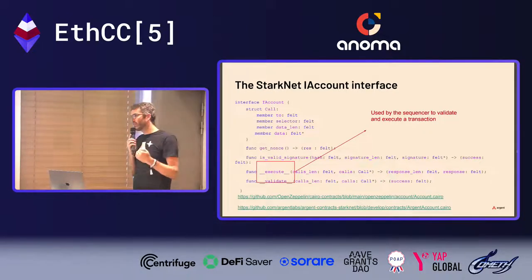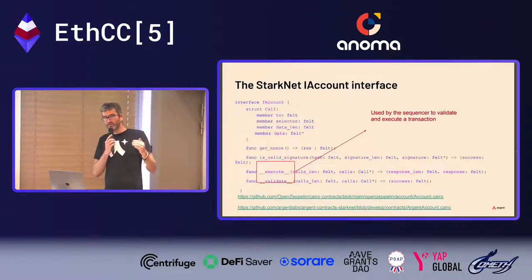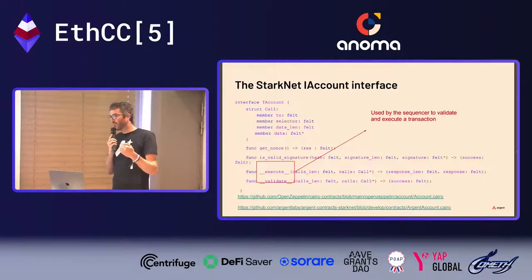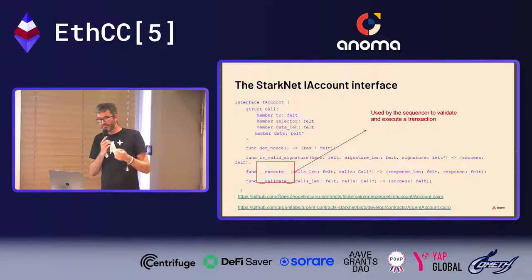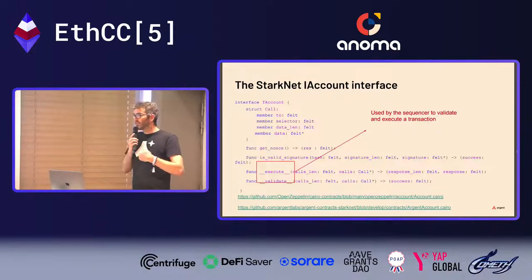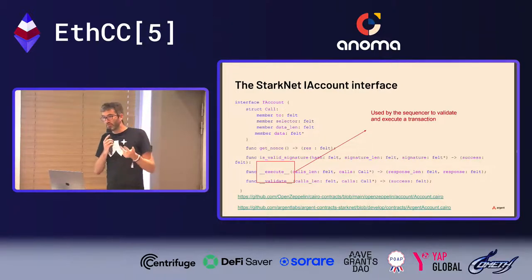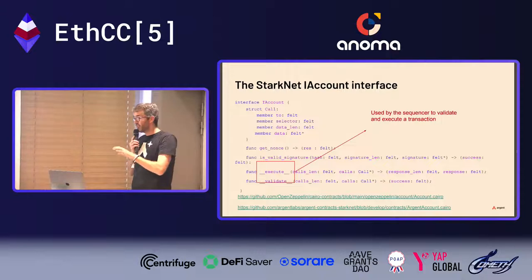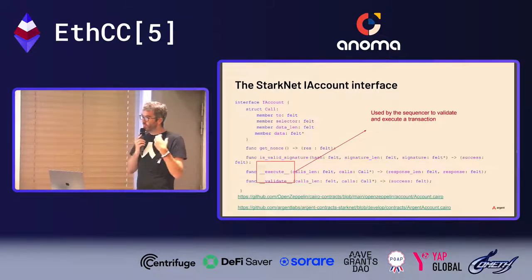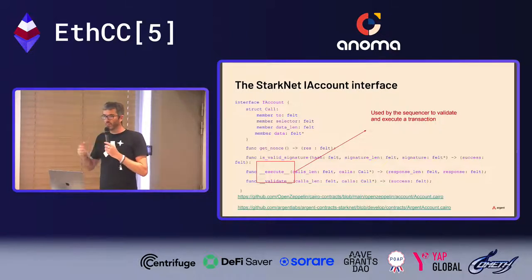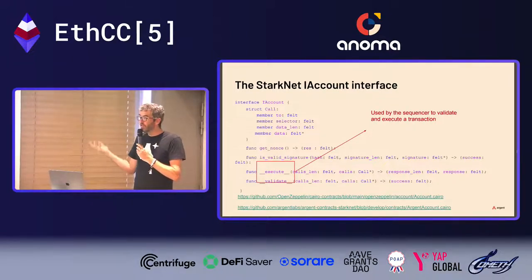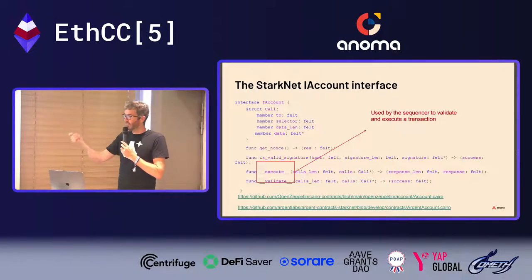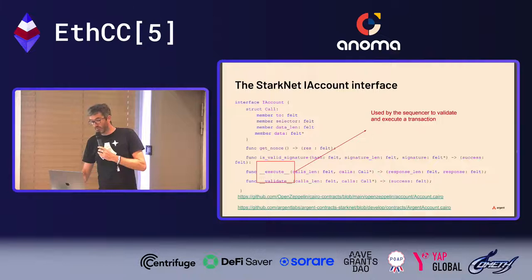The interface has two important methods: validate and execute. The validate method lets the OS or sequencer quickly validate that a transaction will be valid and paid. On Ethereum, this is done by the EVM by checking the signature, nonce, and ETH balance — costing 21,000 gas. With account abstraction, you can program the rules of that validation. Once validated, the execute method runs.